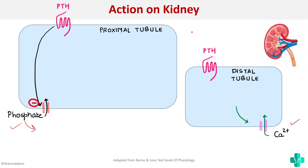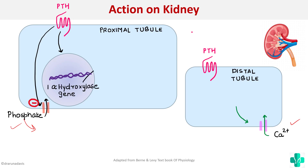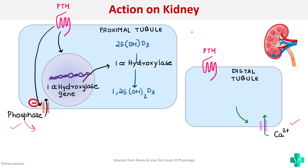There is one more renal function: parathormone stimulates the genes to produce increased 1-alpha hydroxylase. This enzyme converts the inactive form of vitamin D to its active form, 1,25-dihydroxycalcitriol. This active vitamin D then acts synergistically with parathormone to increase calcium absorption.